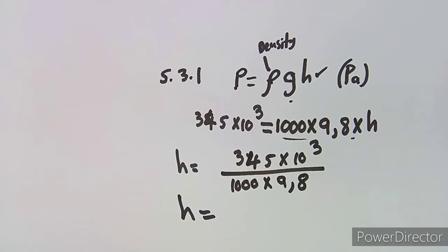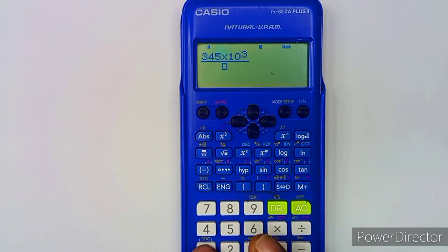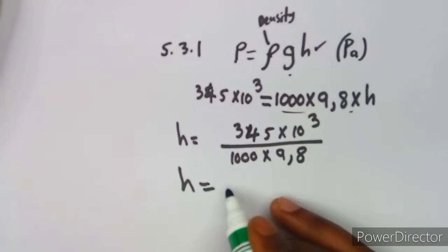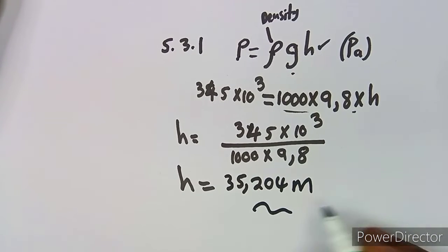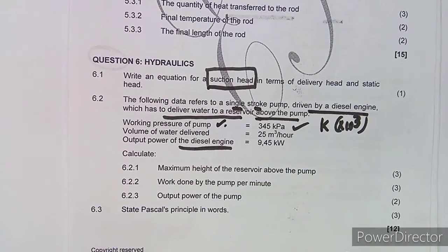Using your calculator: 345 × 10³ divided by (1000 × 9.8) gives you 35.204. So the height is 35.204 metres. Make sure to cross-check with the question you are working with, as the given information is very important and you need to relate it correctly to your working.